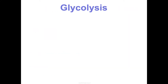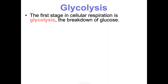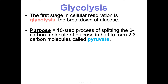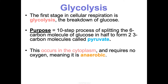Cellular respiration basically has two steps, but it has a special pre-step called glycolysis. It's the first thing that happens — the breakdown of glucose. It is a 10-step process. We're going to take that 6-carbon molecule of glucose, C6H12O6, and split it in half to make two 3-carbon molecules called pyruvates. This doesn't even happen in the mitochondria — it's going down in the cytoplasm, and it requires no oxygen, which means it's an anaerobic process — meaning without oxygen.